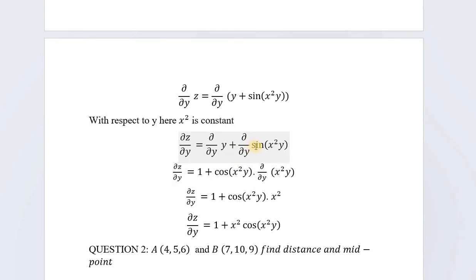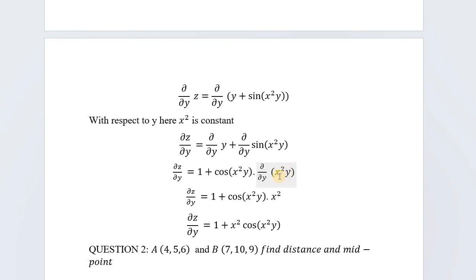The derivative of a constant is zero, and the derivative of sin(x²y) becomes cos(x²y). Then we again differentiate x²y with respect to y. Since we are taking the derivative with respect to y and x² is a constant, we take the constant outside. The derivative of y is 1, so x² remains multiplied, giving x².